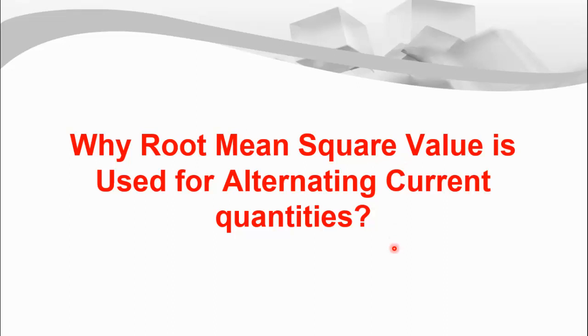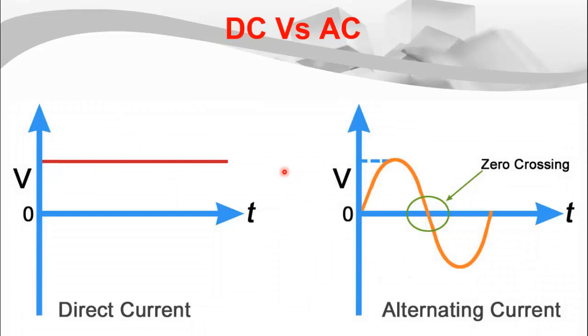At the end of this video we will see the significance of root mean square value for voltage and current. In order to answer this question we'll start by seeing the difference between the direct current and the alternating current quantities.